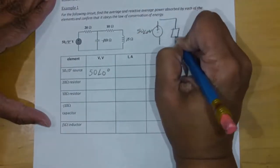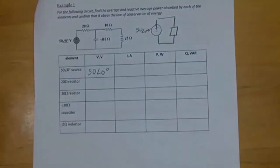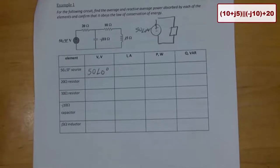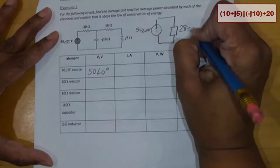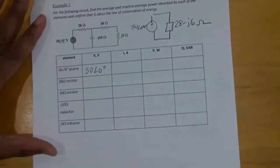Simplify that circuit on the right down to one impedance. I'm going to have 10 plus J5, in parallel with negative J20, plus 20. Find that one impedance, and then use that impedance to find the current. The impedance is 28 minus J6 ohms — that's exactly right.